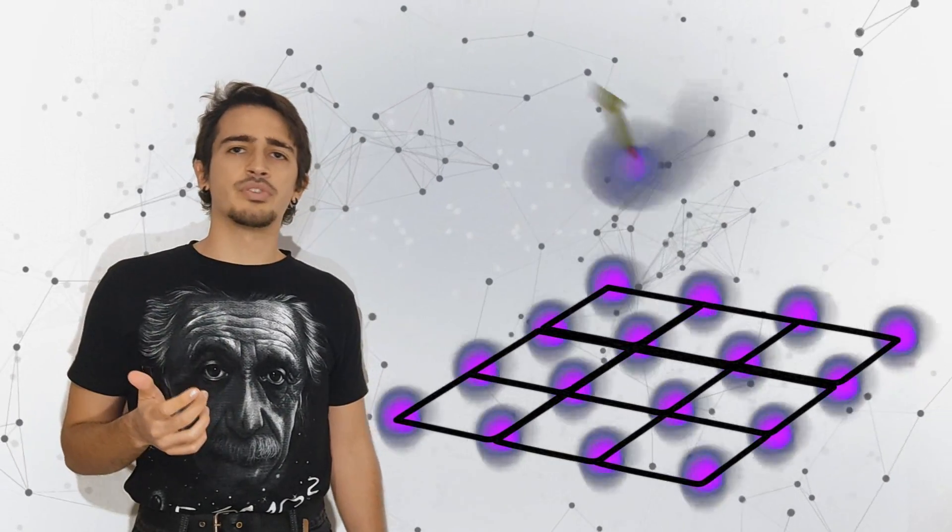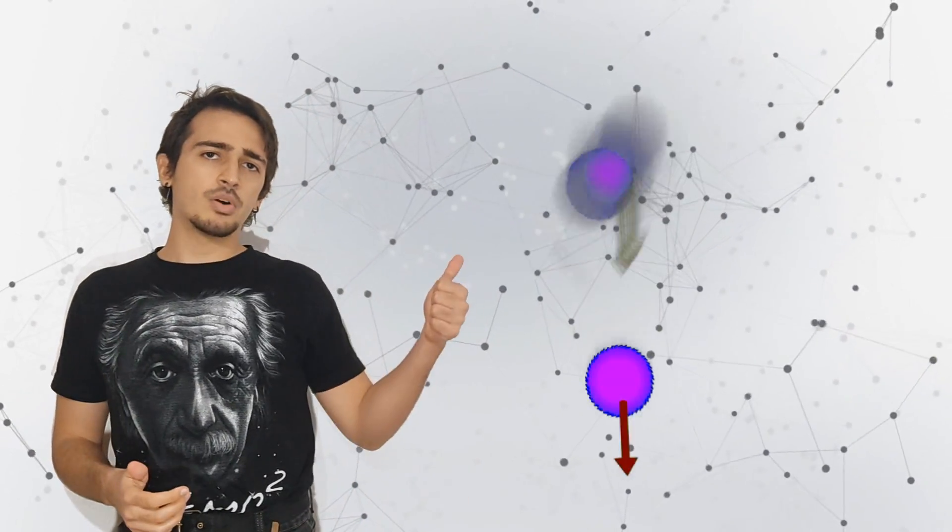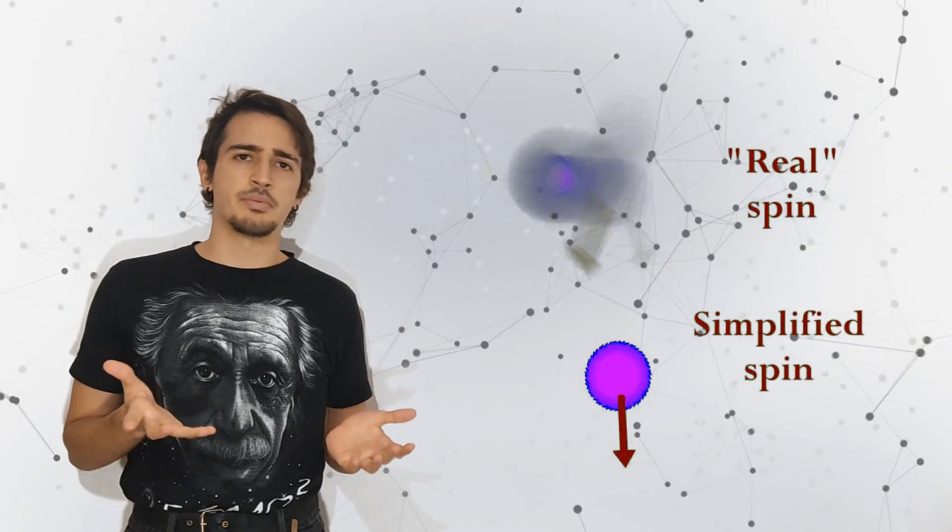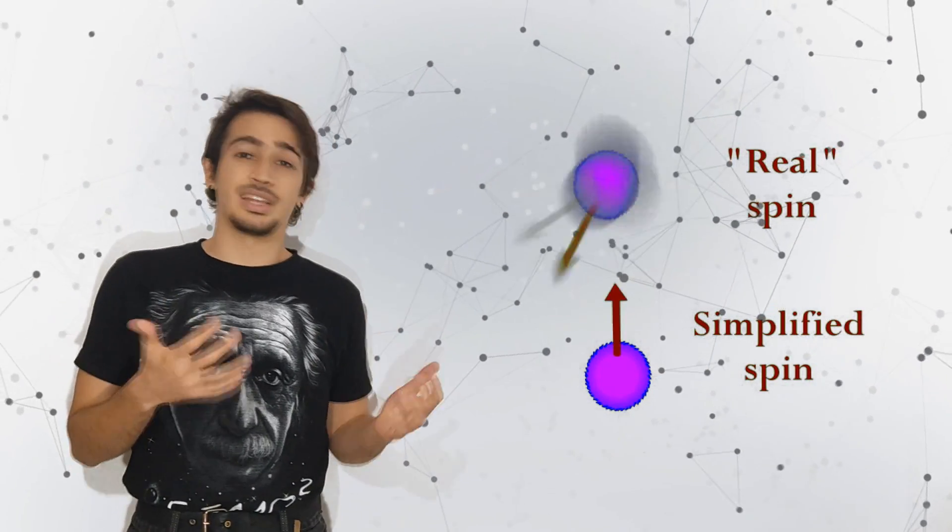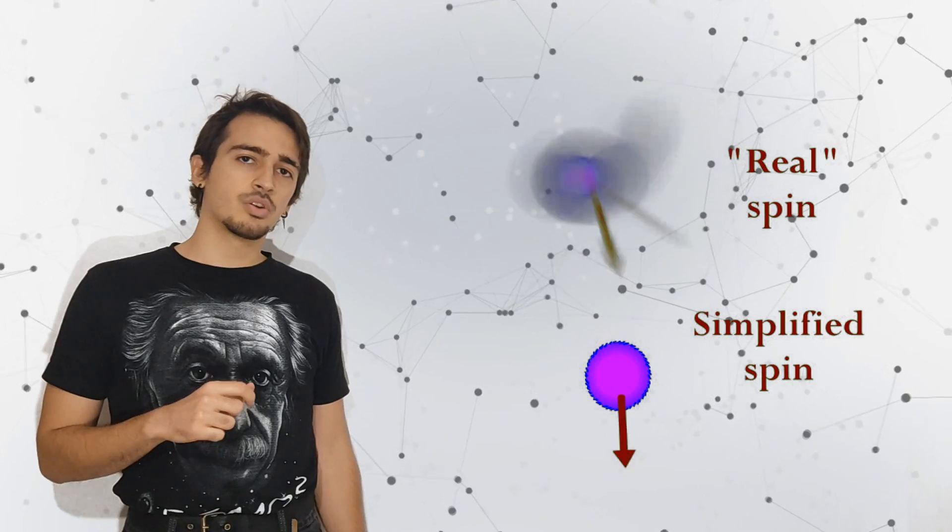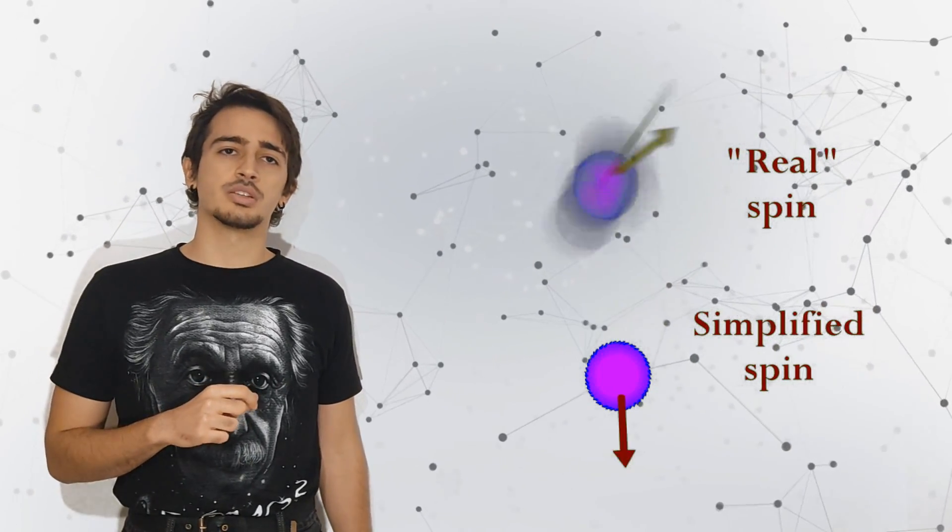In addition to that, in this model, the spin of each electron can be only oriented up or down, which is a huge simplification, but we are physicists, that's what we do. And depending on the configuration of the spins in the lattice, the energy of the system will change.